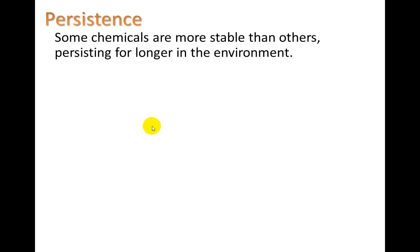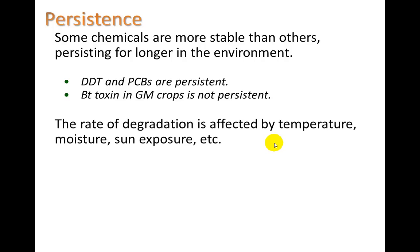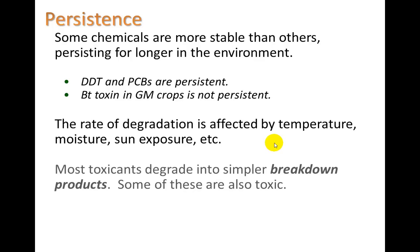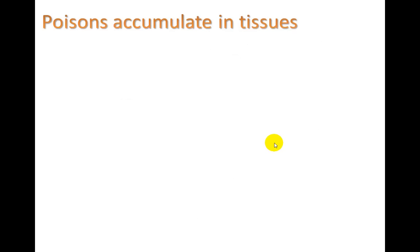Let's take a look at this concept of persistence. Some chemicals are more stable than others, persisting longer in the environment. DDT and PCBs are both very persistent — they can last 10, 20, 30, 40 years in the environment; they're a very strong molecule, hard to break. Whereas BT toxin in genetically modified crops is not persistent and might last only weeks or months. The rate of degradation is affected by temperature, moisture, and sun exposure. Most toxicants degrade into simpler breakdown products, but some of these are also toxic — for example, DDT breaks down to DDE, which is also toxic.